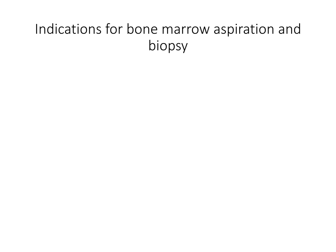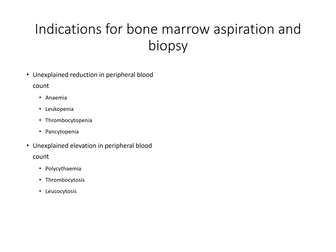Indications for bone marrow include unexplained reduction in peripheral blood count, which can be anemia, leukopenia, thrombocytopenia, or pancytopenia. Unexplained elevated counts, which can be in the form of polycythemia, leukocytosis, or thrombocytosis.